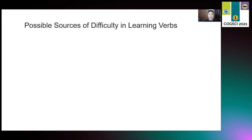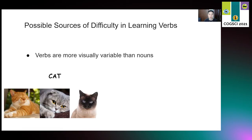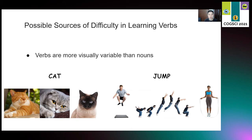So within this framework, we would unpack the problem and examine a few possible sources of difficulty in learning verbs. One possibility is that verbs are more visually variable than nouns. For example, cats are different from each other in terms of their size or fur color. However, as for jump, in addition to the differences in the agent, jump could be an upward movement, or a forward movement, or even jumping rope is one kind of jump. So the variability in visual stimuli might make verbs harder to learn than nouns.